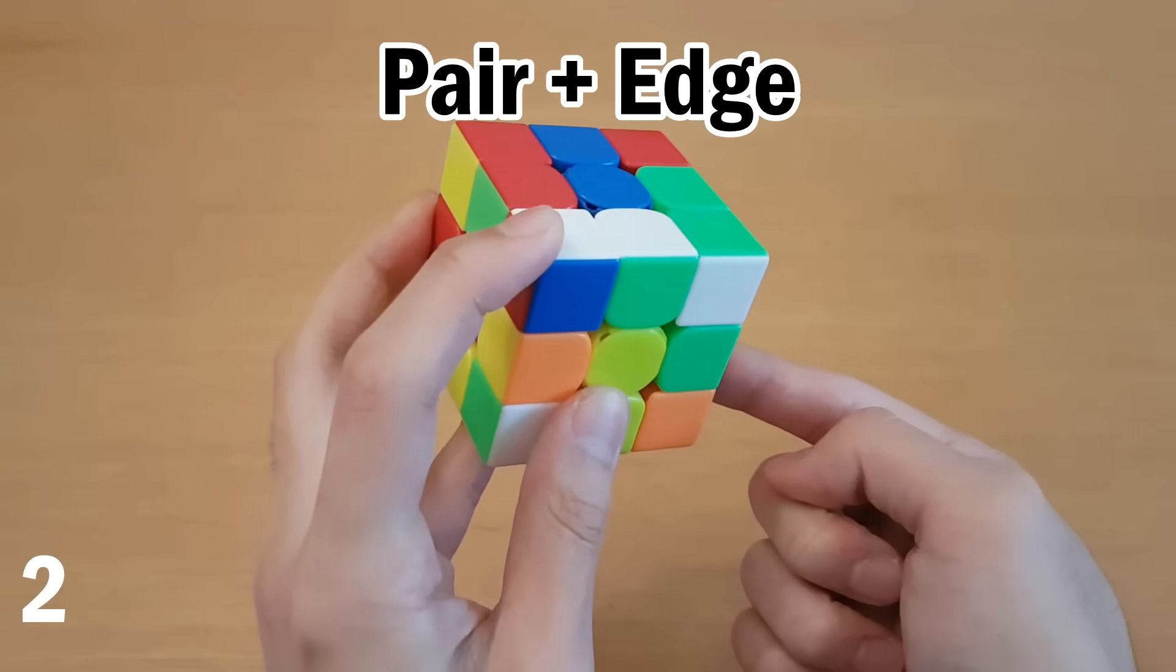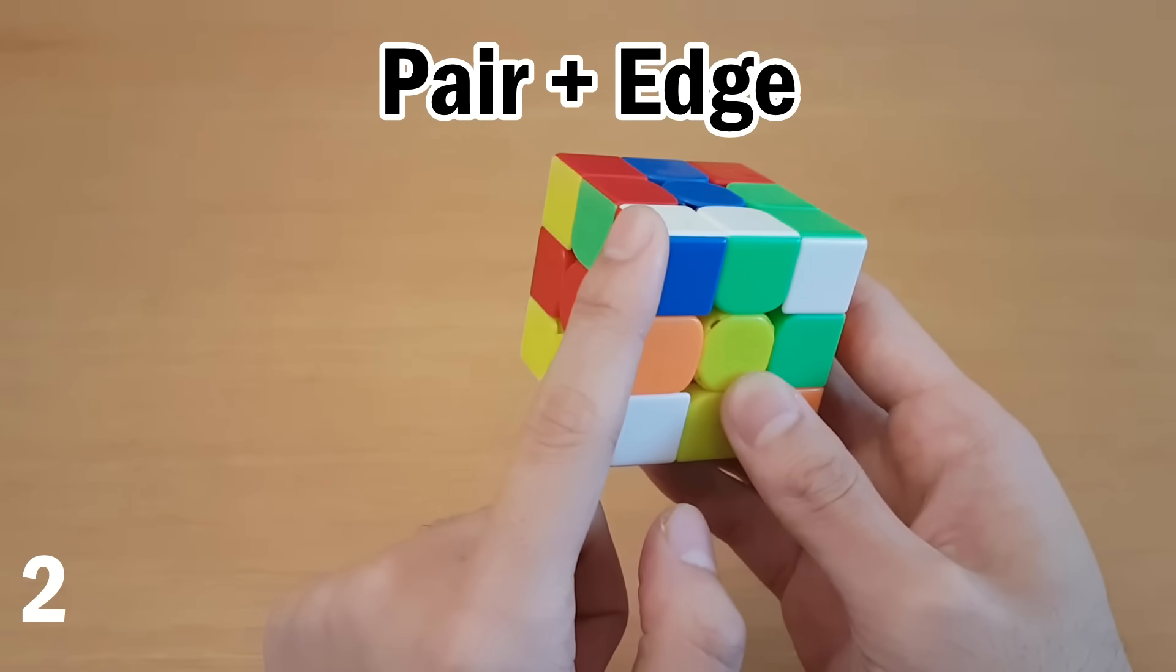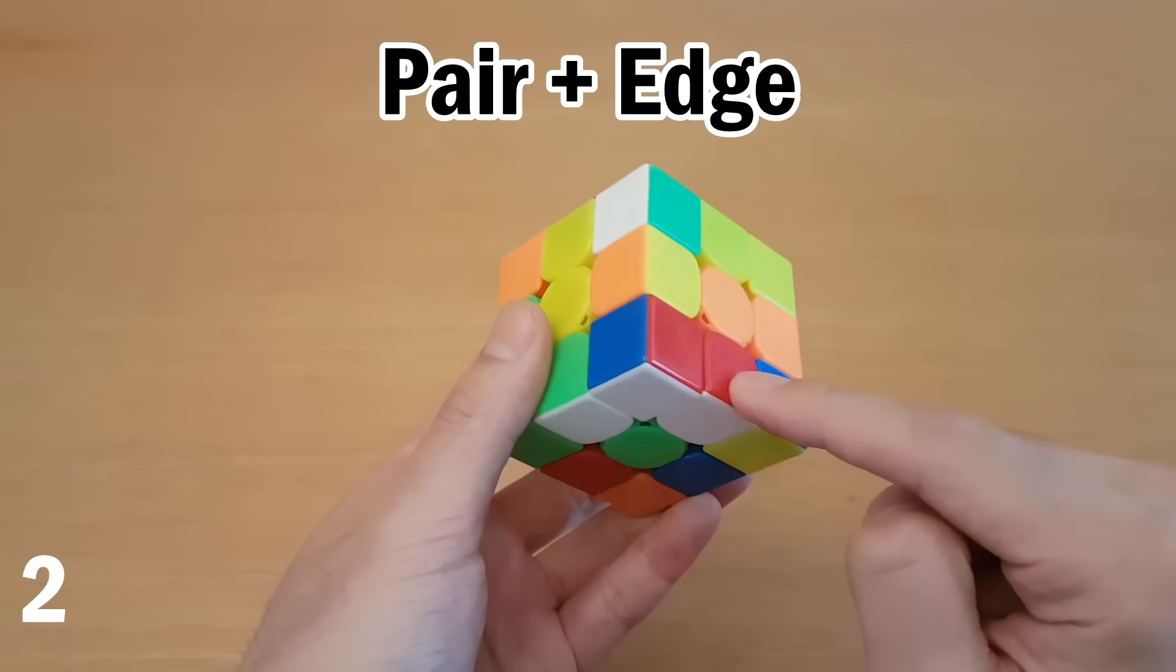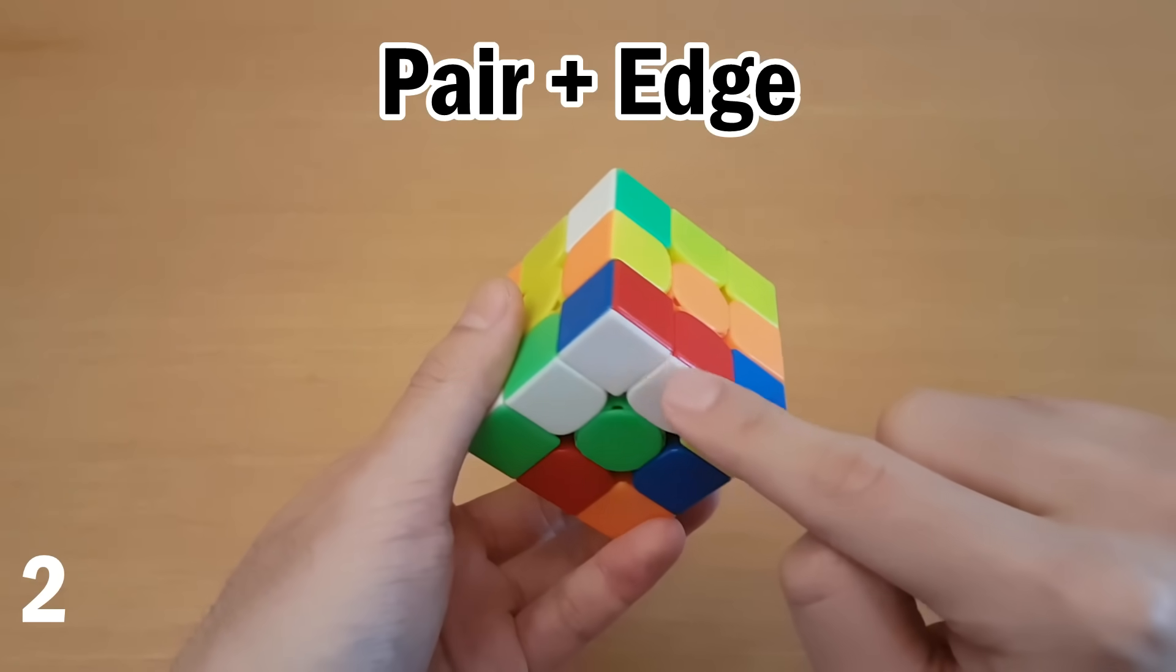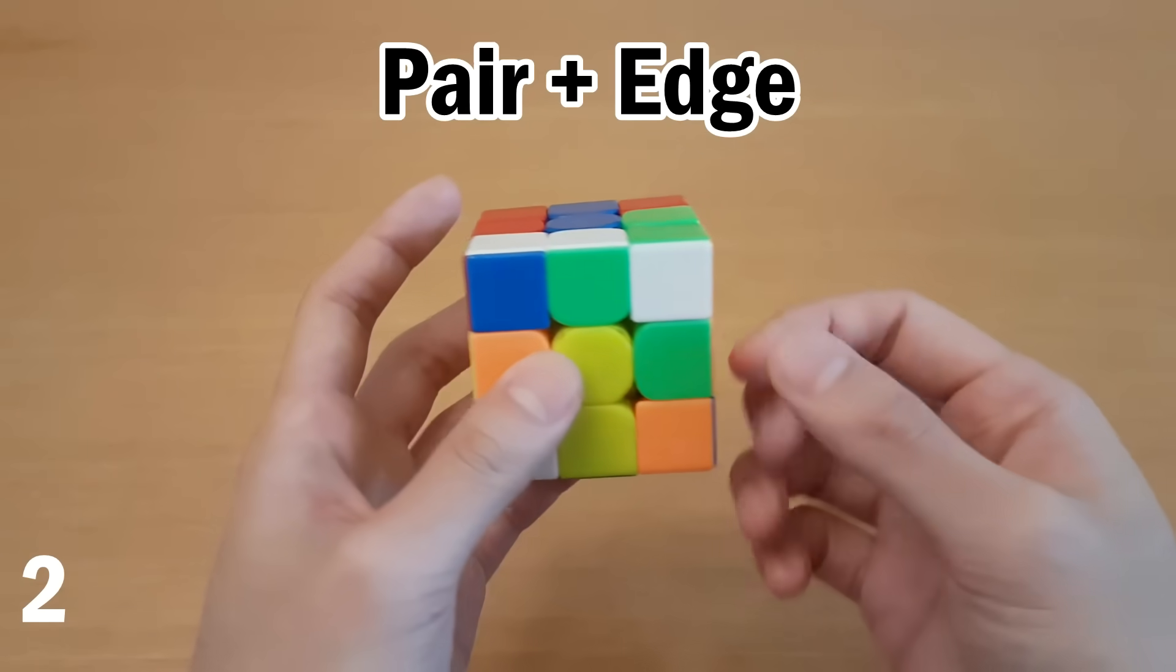So once you find the three pieces needed for a square, you just need to pair the corner with either one of them. In this case, it's going to be harder to pair this one with this one, so we could actually just do F2 and that pairs this one. So at first, it's going to be very uncomfortable making pairs that include two whites on it, because that's not what you normally do for CFOP.